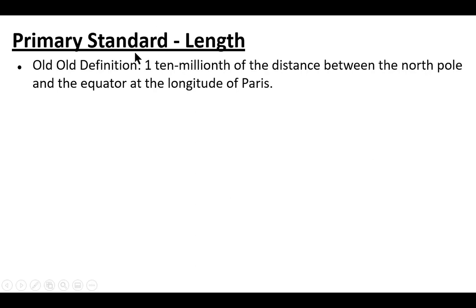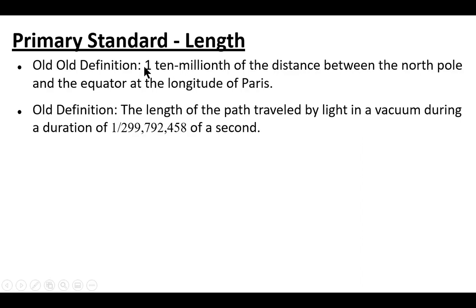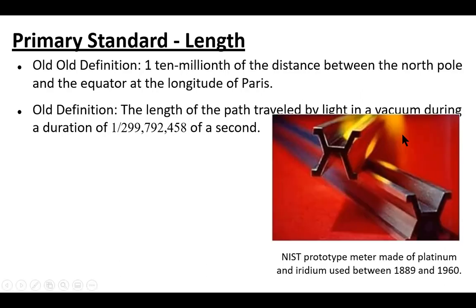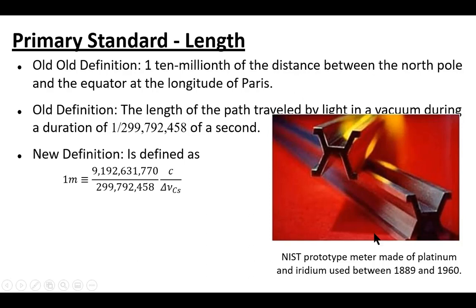The old meter was defined as one ten-millionths of the distance between the North Pole and the equator at the longitude going through Paris - they didn't have any idea about continental drift. The new definition is based on light: how far does light travel in a vacuum over a certain period of time. There's also an actual prototype meter made of platinum-iridium that existed.